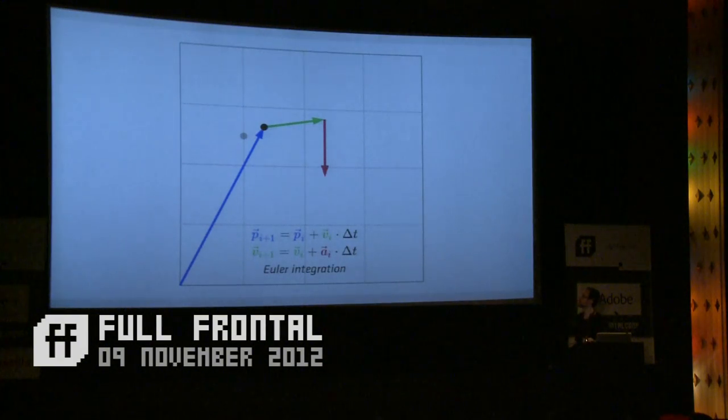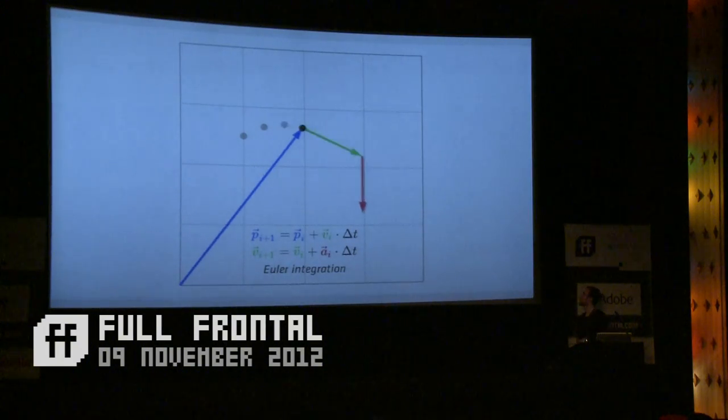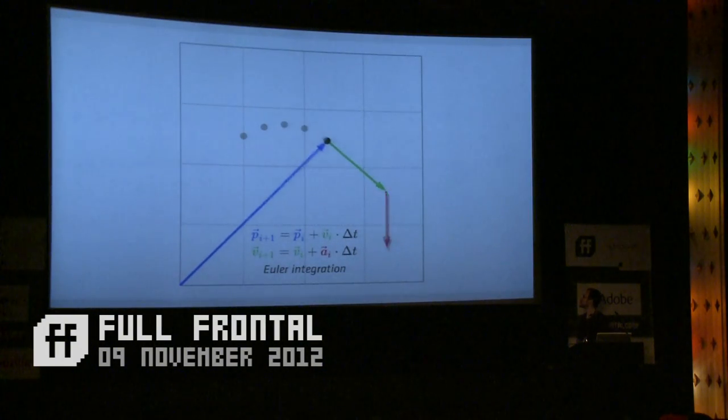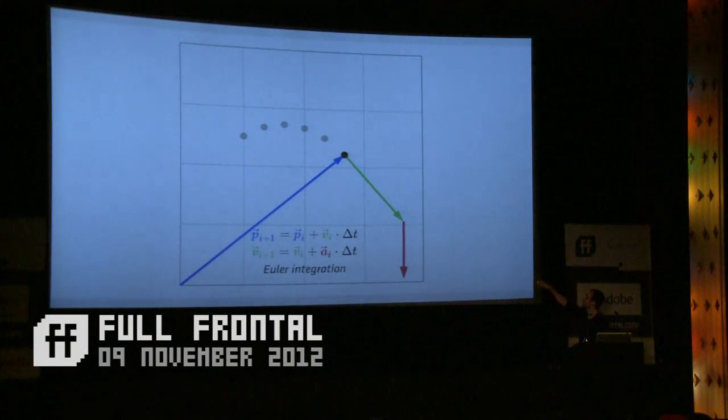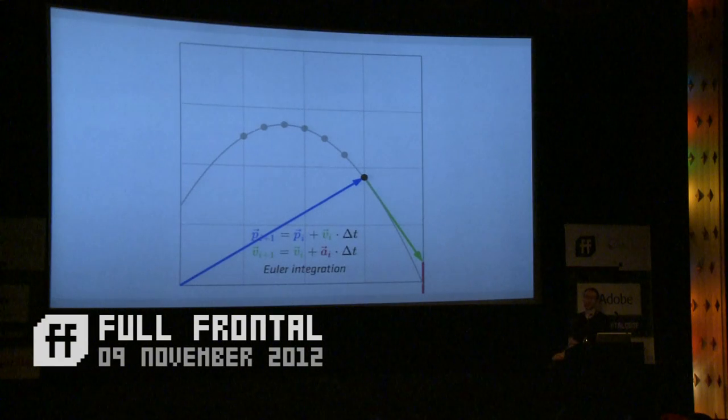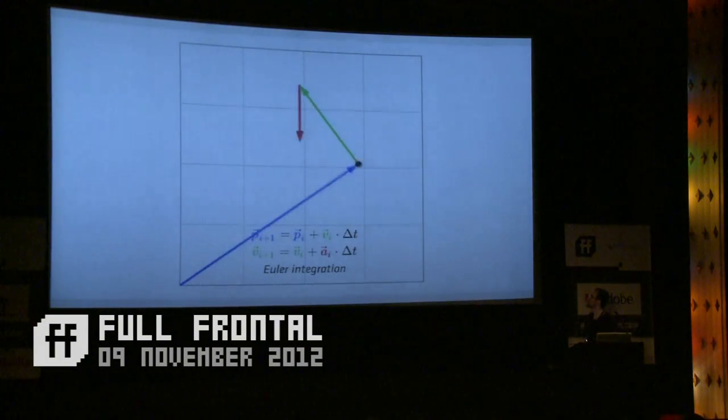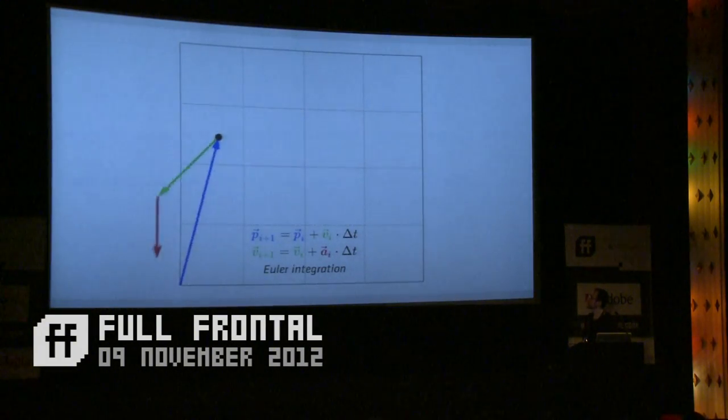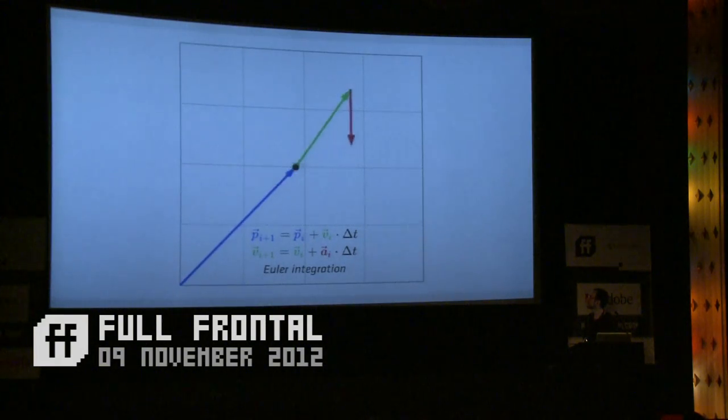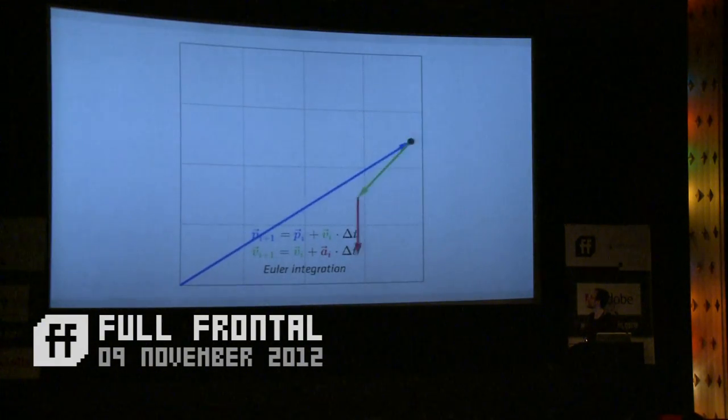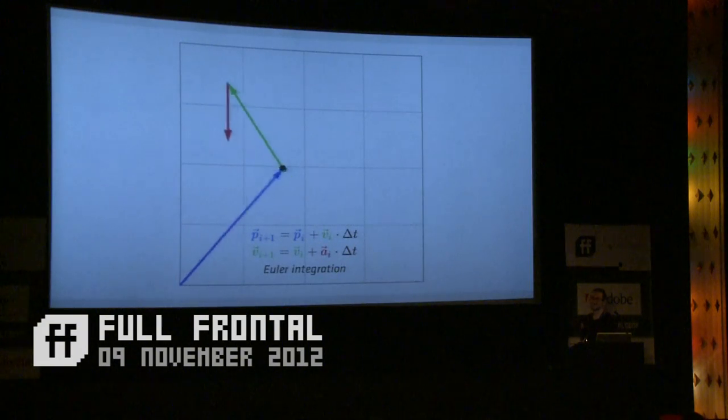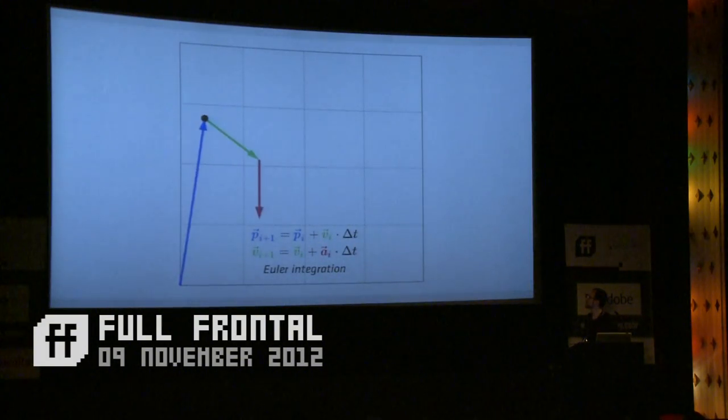And now we actually have the physics engine already. This is all we need to do. Because watch, if we keep doing this process, advancing by little time steps, you see the acceleration tugs on the velocity, the velocity tugs on the position, and it traces out an arc just like an object would when you throw a ball in a gravity field. You do it in small enough time steps, it just sort of works. And like I said, this is a full physics engine. It doesn't look like it.